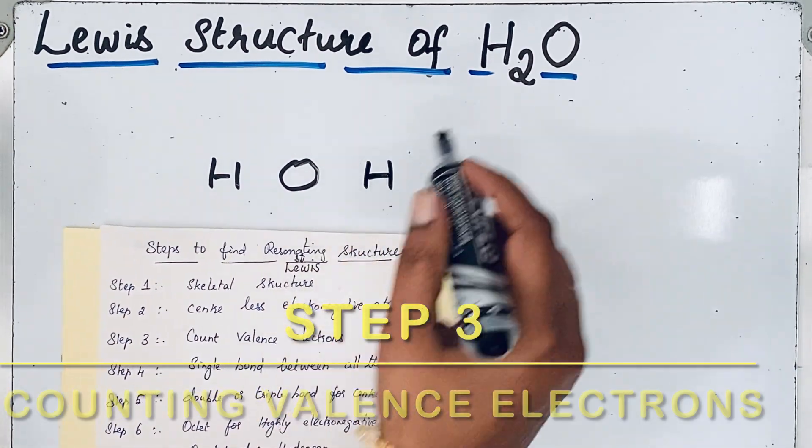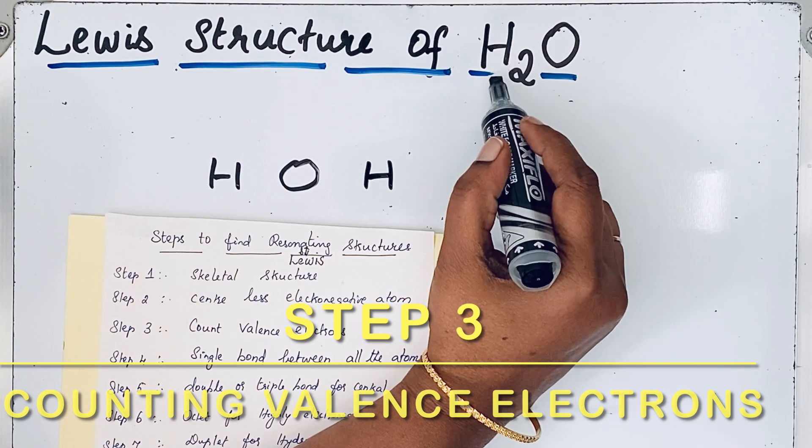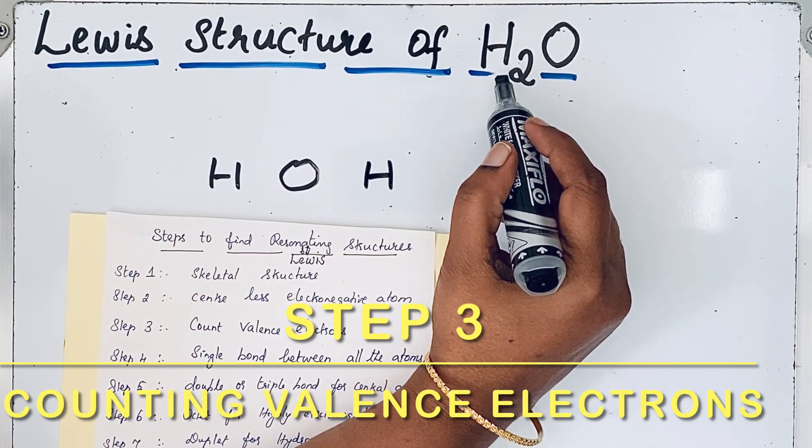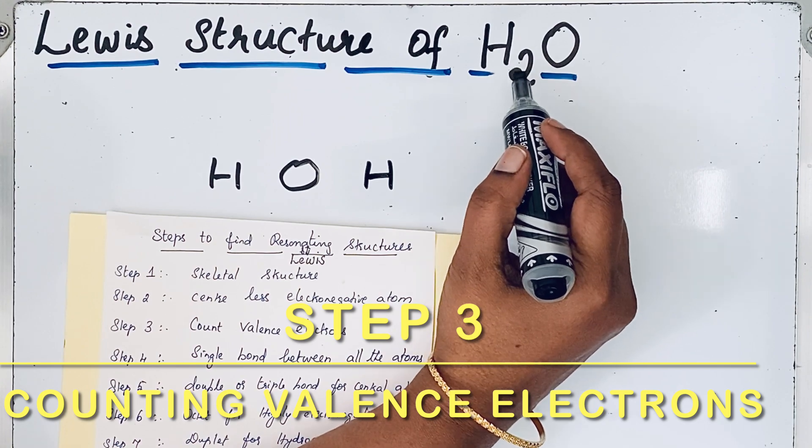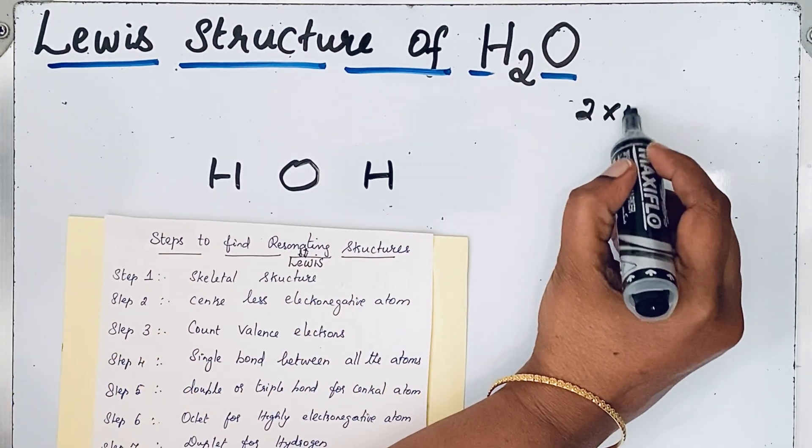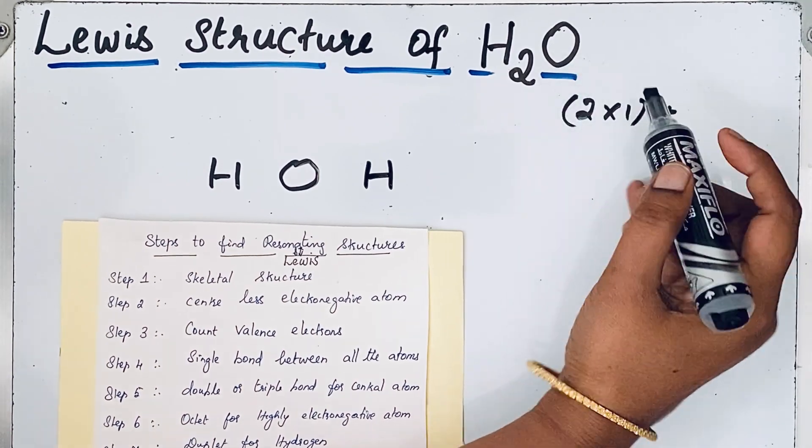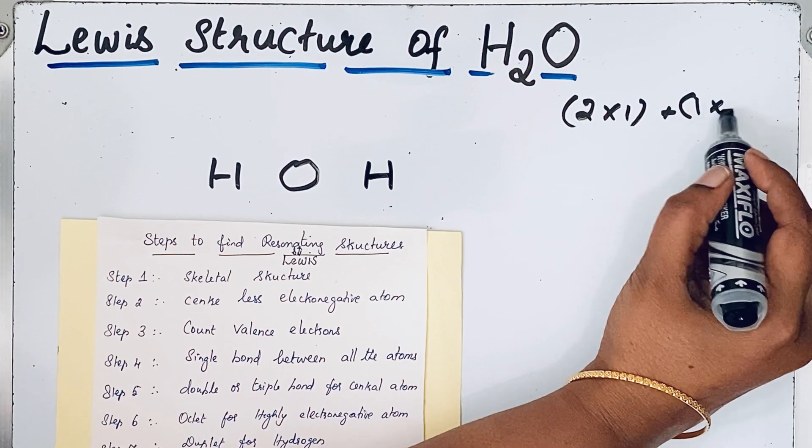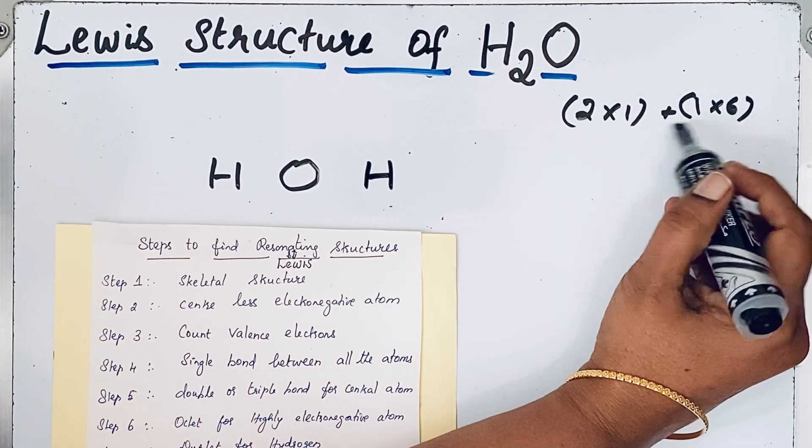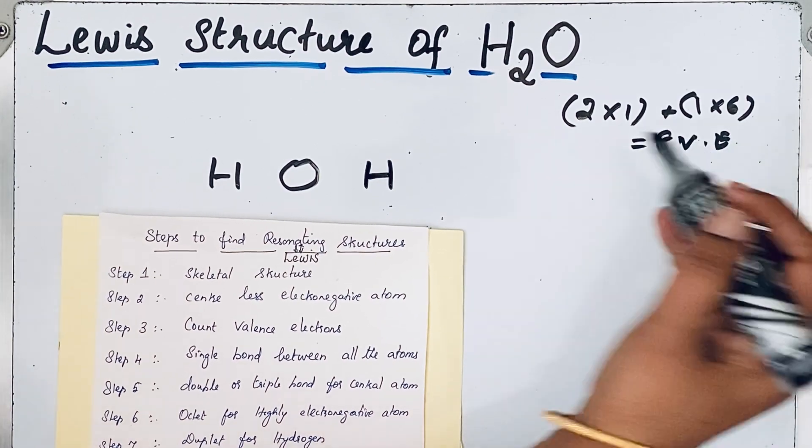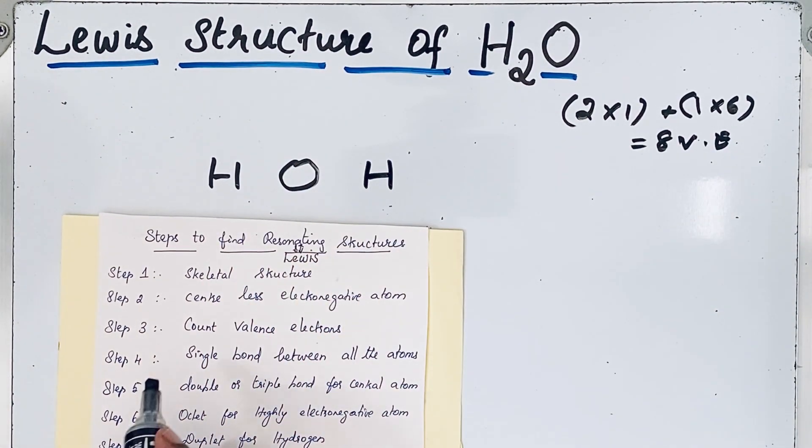Count the valence electrons. In the H2O molecule, there are two hydrogen atoms. Each hydrogen atom has one valence electron. So two times one, plus one oxygen atom with six valence electrons equals eight. Eight valence electrons should be present in the Lewis structure of H2O.